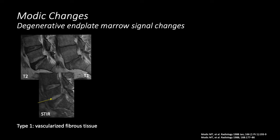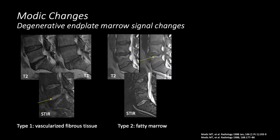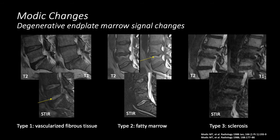The most common focal bone marrow abnormality we see, however, is benign. These are examples of Modic changes, which are degenerative endplate marrow signal changes. Type 1 is vascularized fibrous tissue, which has similar signal intensity to edema — bright on T2, dark on T1, and bright on STIR. Type 2 Modic changes involve fatty marrow replacement adjacent to the endplate. And Type 3 involves sclerosis, where the signal intensity of the endplates decreases on all sequences.